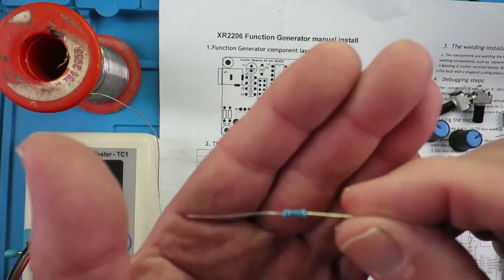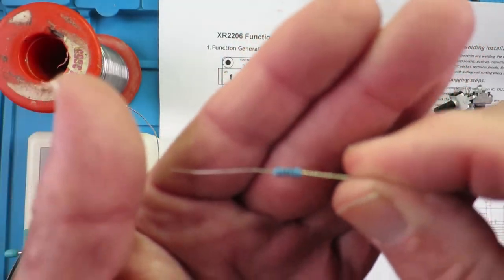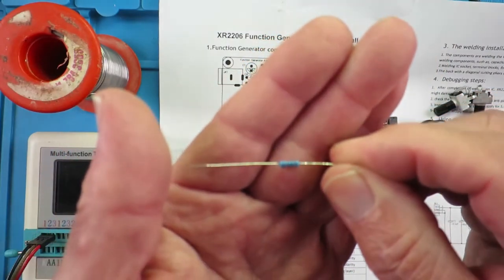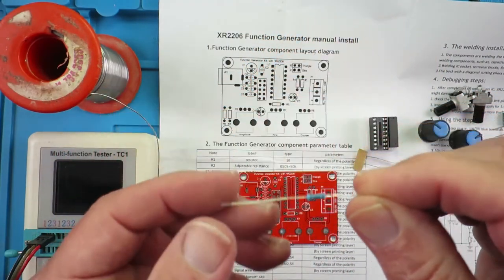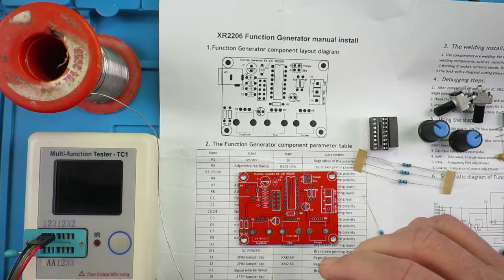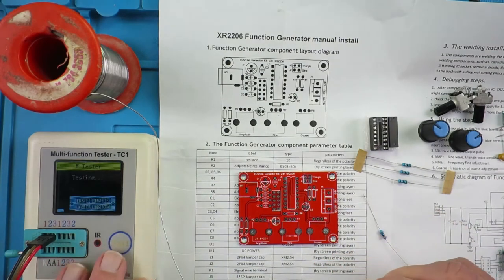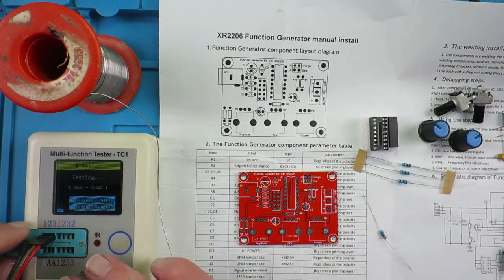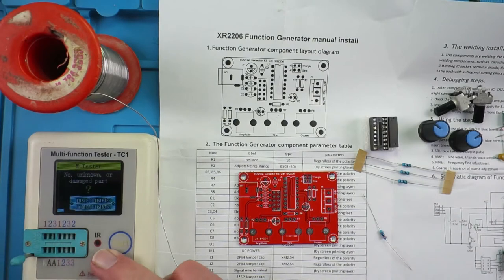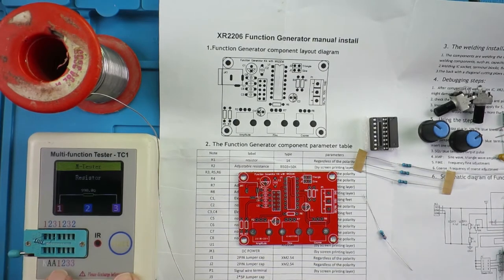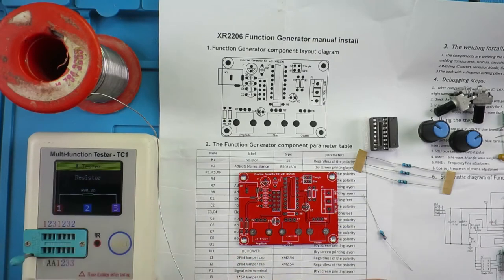Now these components have the 5 band colour code on them, which maybe is not familiar to many people, especially starting out. So I always recommend using this little tester. So that's 990 ohms, which is 1K, as near as makes no difference.